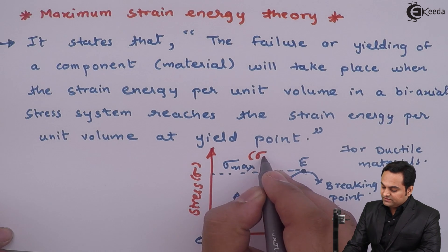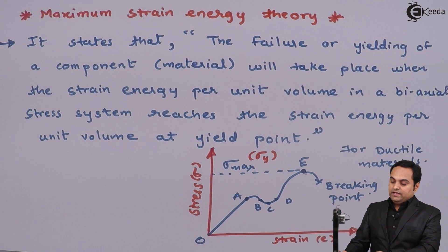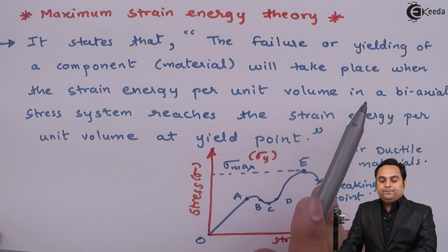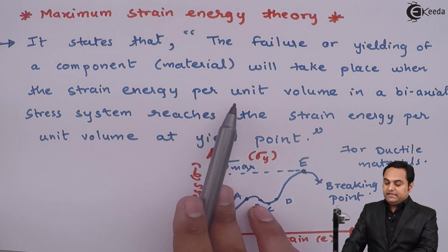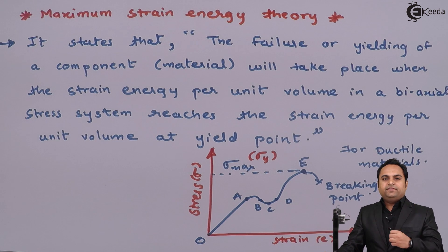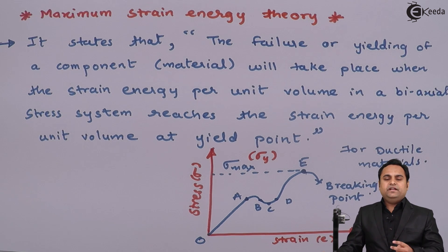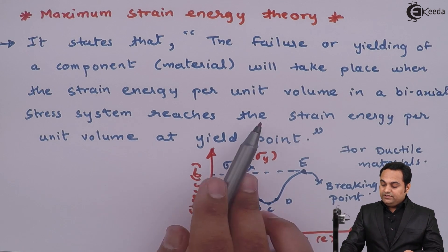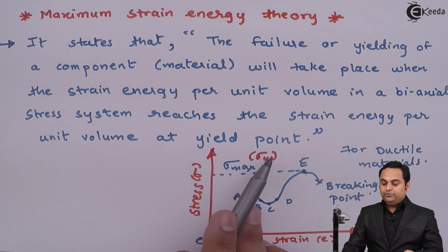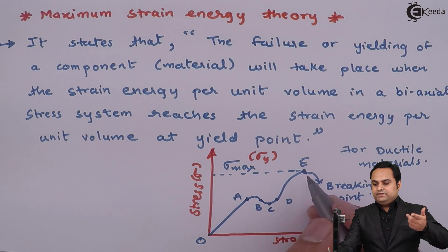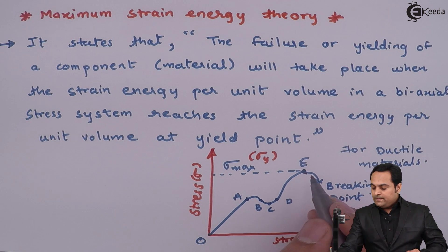The stress here, Sigma max, is called the yield stress. The failure or yielding of a component will take place when the strain energy per unit volume — that is, the strain energy stored inside the material per unit volume — in a biaxial stress system, meaning we have two stresses in the system, reaches the strain energy per unit volume at the yield point.